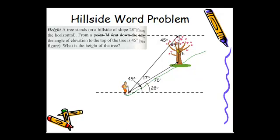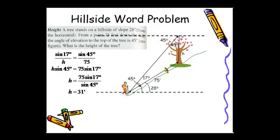We now have a triangle with two angles and one side. That's set up perfectly for a law of sines. So to find side H, we're going to use its opposite angle 17. And we know 75 and its opposite angle 45. So we set up our law of sines proportion.